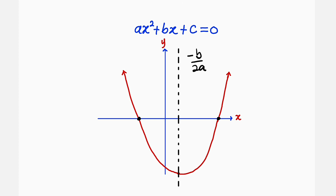One interesting thing about this line of symmetry: it has equal distance from the two given roots. So from the line of symmetry to one root is exactly equal to the distance from the line of symmetry to the other root.